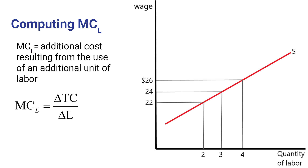In a competitive market, the wage rate was the same for all workers, so the marginal cost of an additional worker was just the wage rate. But here the situation is more complicated because in order to hire more workers, the firm has to pay a higher wage — not just to the new worker, but to all workers.